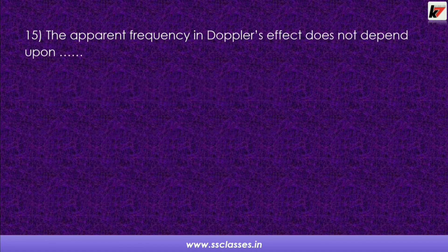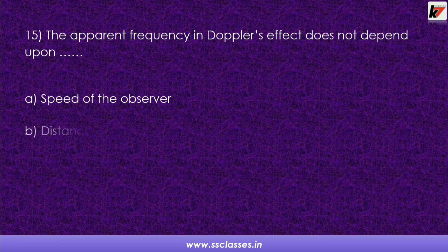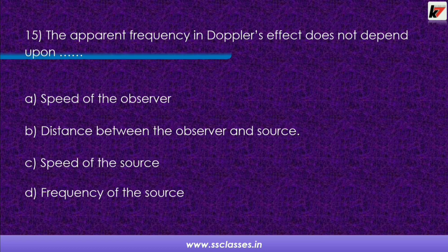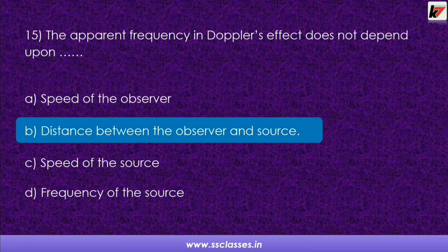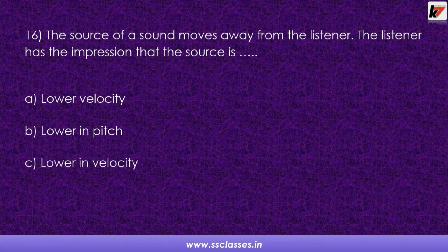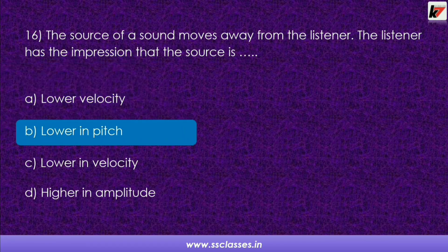Question 15: The apparent frequency in the Doppler effect does not depend on? Options are: speed of observer, distance between observer and source, speed of the source, or frequency of source. When you observe the formula, you can notice that the distance between observer and source is not a dependency for apparent frequency in the Doppler effect. Question 16: The source of a sound moves away from the listener. The listener has the impression that the source is? The correct answer is lower in pitch.